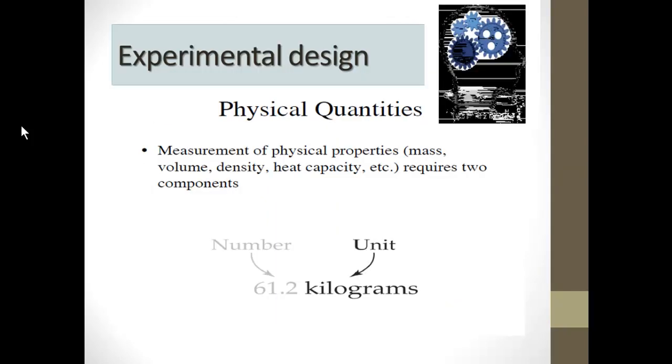What is a physical quantity? Physical quantity is defined as a measurement of physical properties. Physical quantities require two components: number and unit.